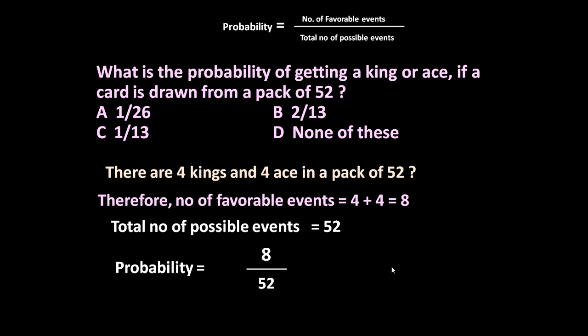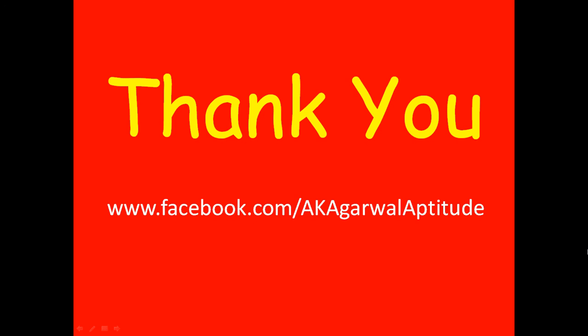So probability equals 8 divided by 52, which is equal to 2/13. That is the answer. Here we learned some techniques for solving problems on simple probability. Thank you very much for watching.